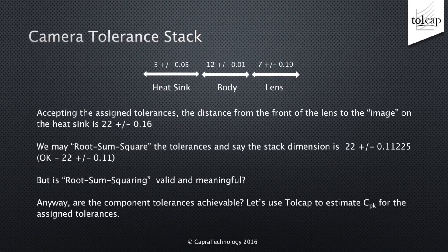Accepting the assigned tolerances, the distance from the front of the lens to the image on the heatsink is 22 plus or minus 0.16, worst case. We may root-sum-square the tolerances and say the stack dimension is 22 plus or minus 0.11. But is root-sum-squaring valid and meaningful? And are the component tolerances achievable? Let's use Tolcap to estimate CPK for the assigned tolerances.